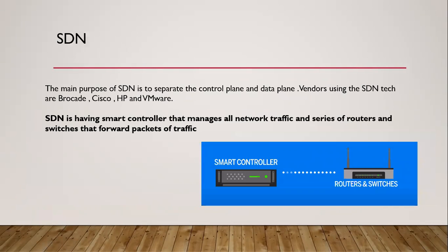This is the main SDN diagram. The main purpose of SDN is to separate your control plane from the data plane. The vendors using SDN include Brocade, Cisco, HP, and VMware. Basically we have one smart controller and that smart controller manages all the network and traffic and the series of routers and switches that forward the packets of traffic.